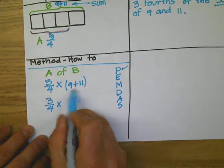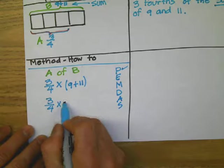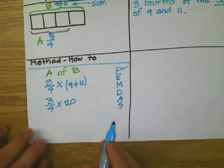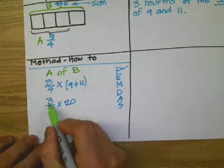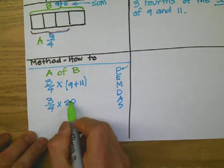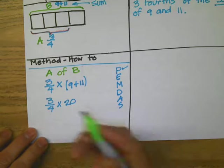I mentioned in other videos, my friend, remember that we have to have fractions and fractions, or a whole number and a whole number. In this case, we're working with fractions, so we're going to make the 20 a fraction. We add a one below it.